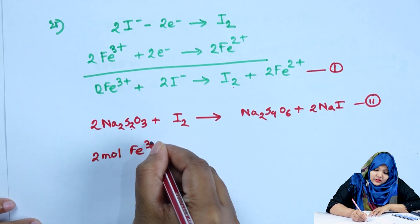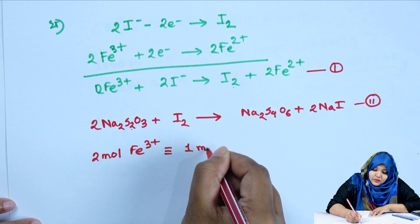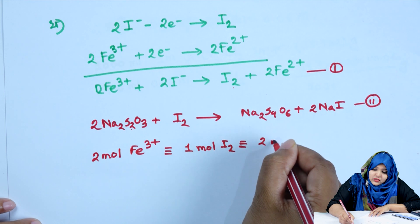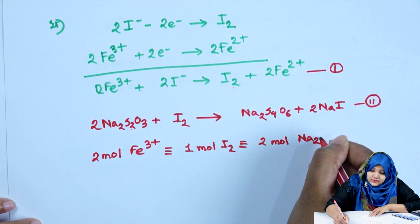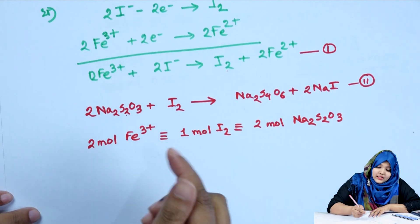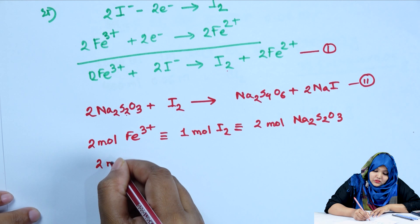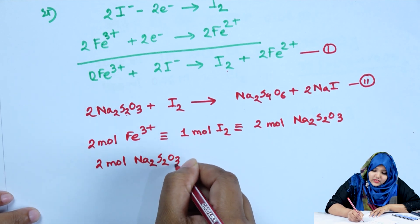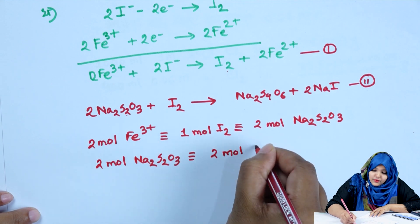1 mol iodine is equivalent to 2 mol sodium thiosulfate. By the same reasoning, 2 mol sodium thiosulfate is equivalent to 2 mol ferricyanide.